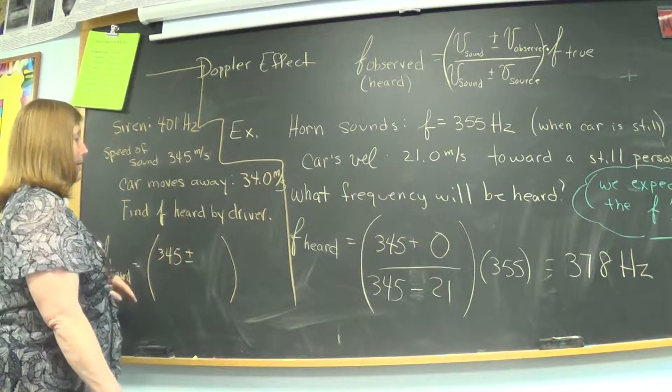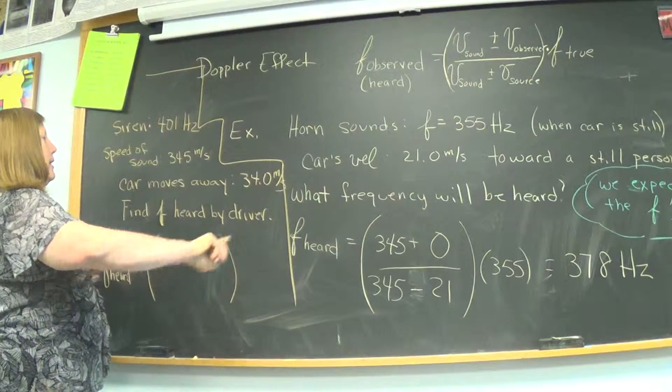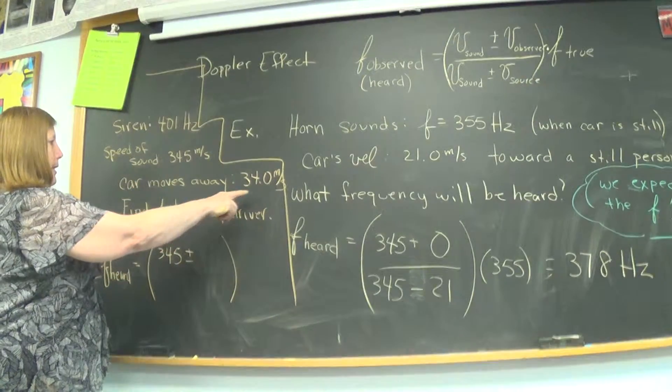The velocity of the observer is the guy in the car, he is moving, and he is moving at 34.